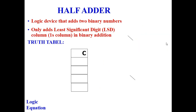In adders, we have two types: half adder and full adder. A half adder adds two binary numbers, while a full adder adds three binary numbers. We will now go through the truth table, logic equation, K-map, logic symbol, and logic diagram for each.